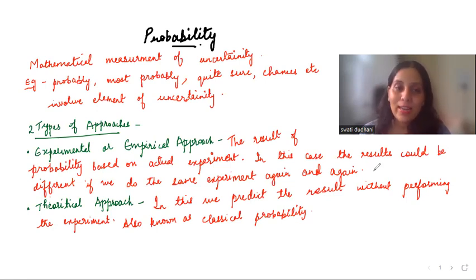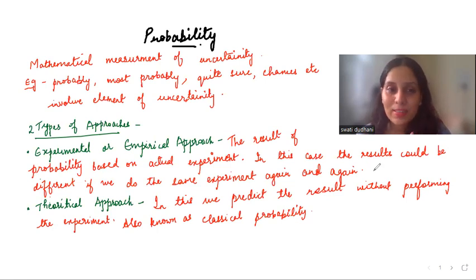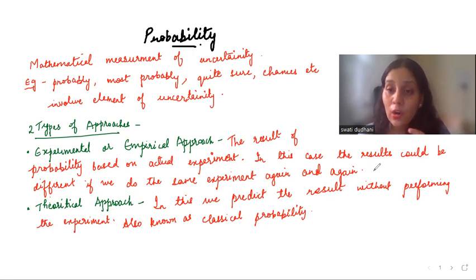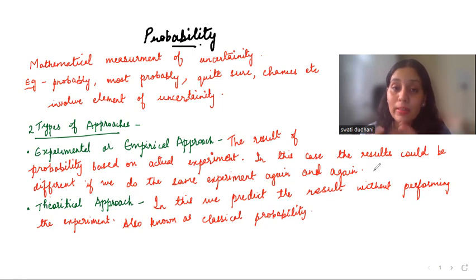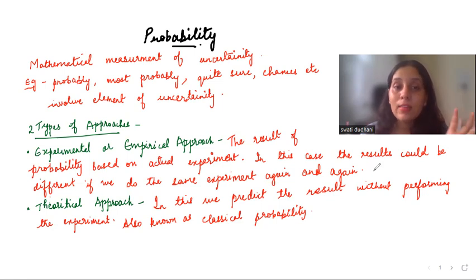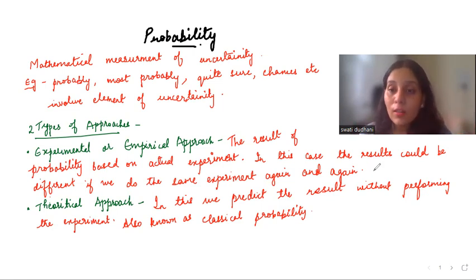We'll also do some important questions that have been repeated in your board exam. So let's get started. Firstly, what is probability? It is the mathematical measurement of uncertainty. If you are not sure about an event happening — it might or might not happen — there are some probable chances. Like, I'm quite sure it's going to happen, there's like 70% chance. So these are all elements of uncertainty.